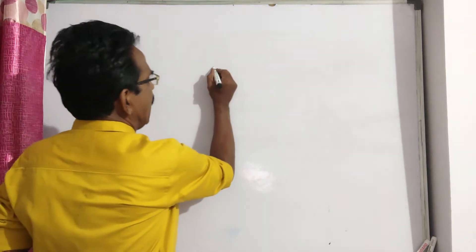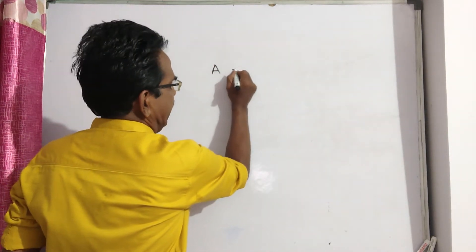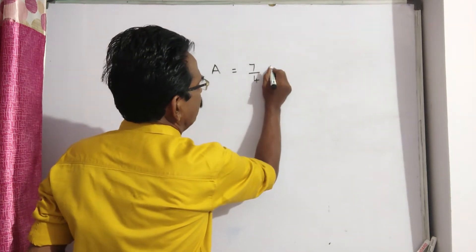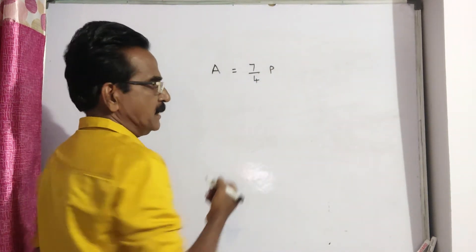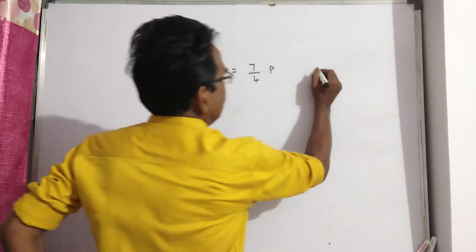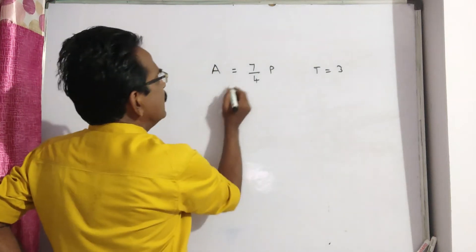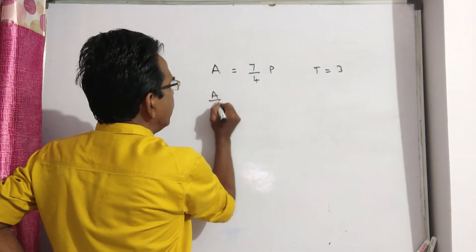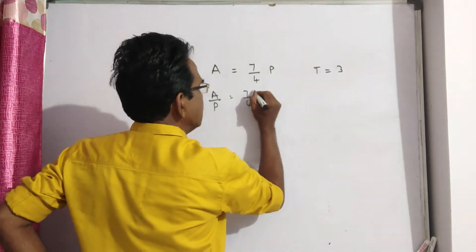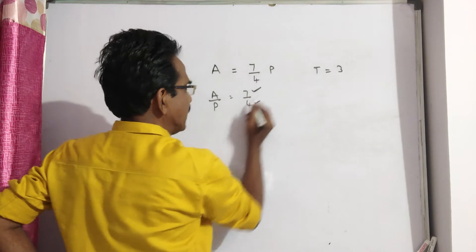A certain sum of money amounts to — 'amounts to' means A is equal to 7 by 4 times of itself, that is the principle. In 3 years, A is equal to 3 years. Now A by P is equal to 7 by 4. That means if P is equal to 4, A is equal to 7.